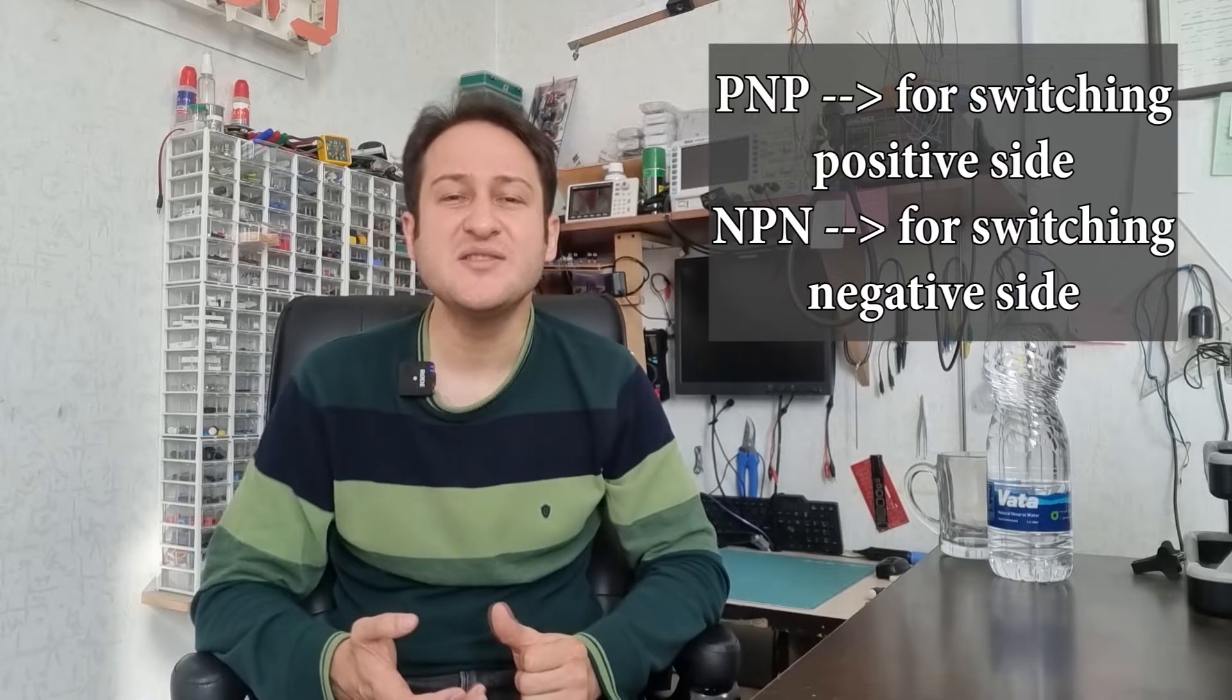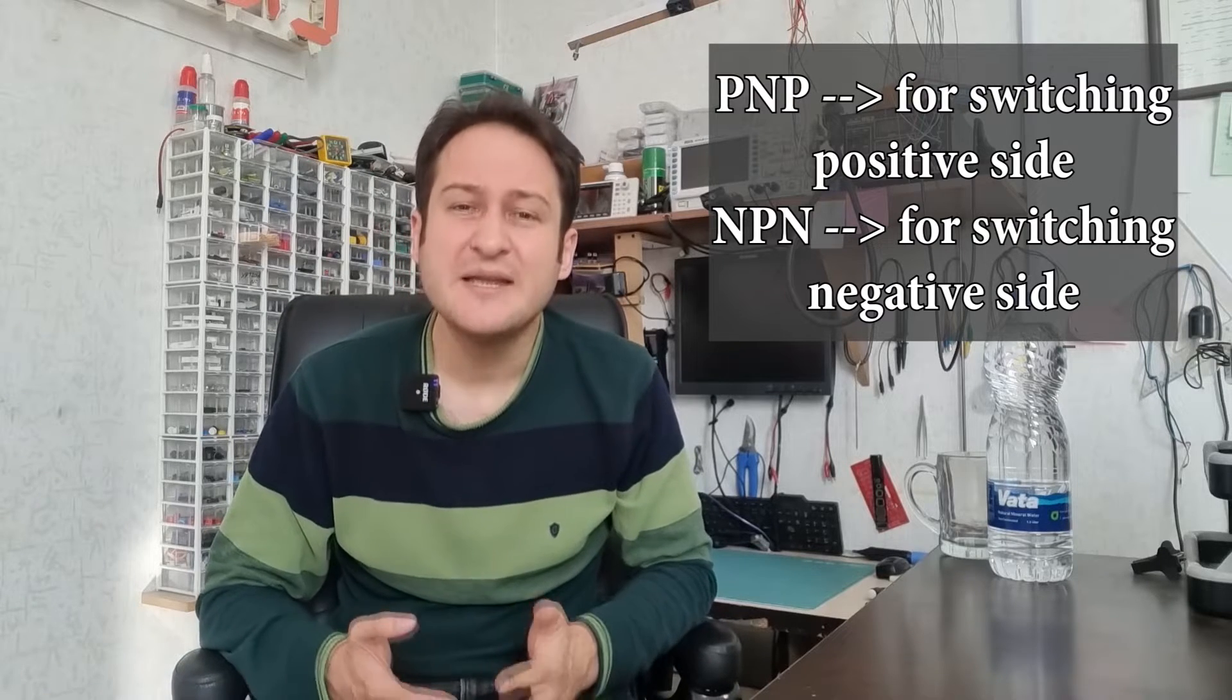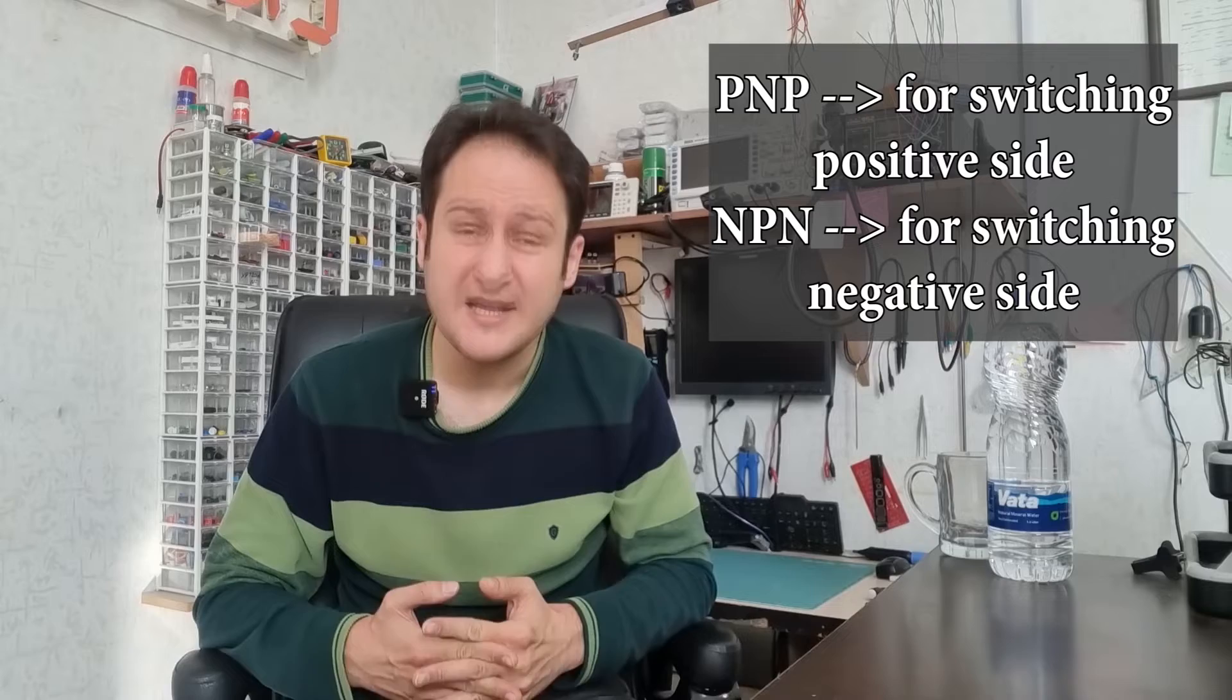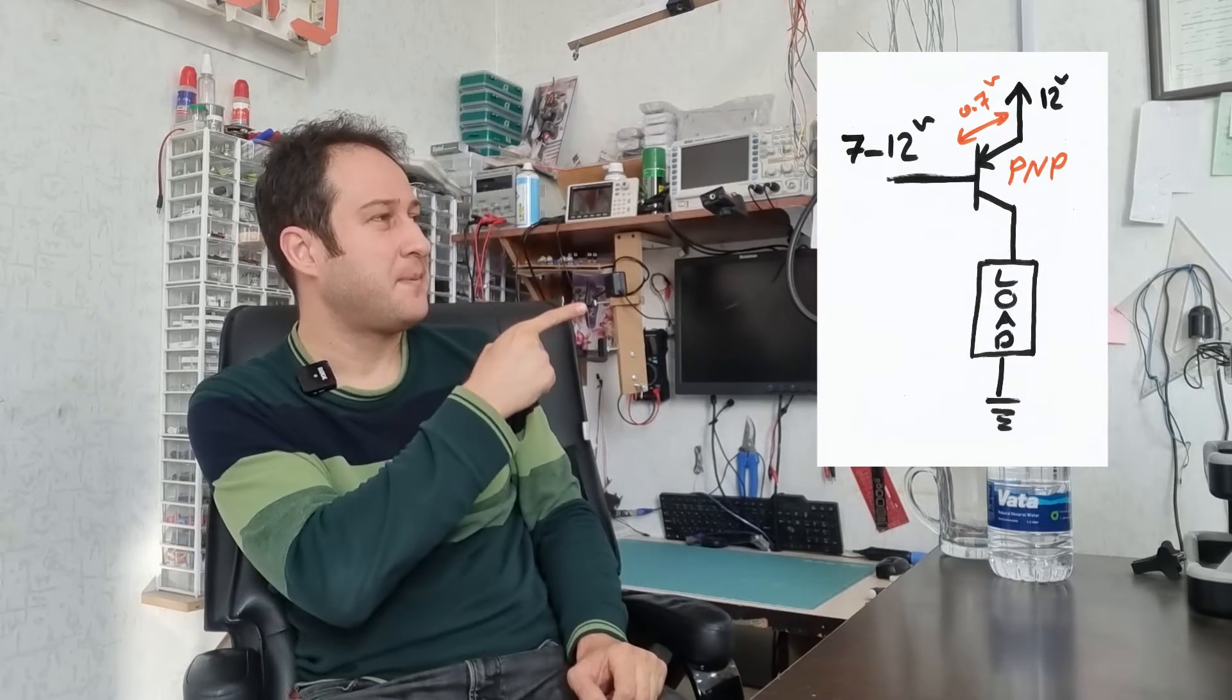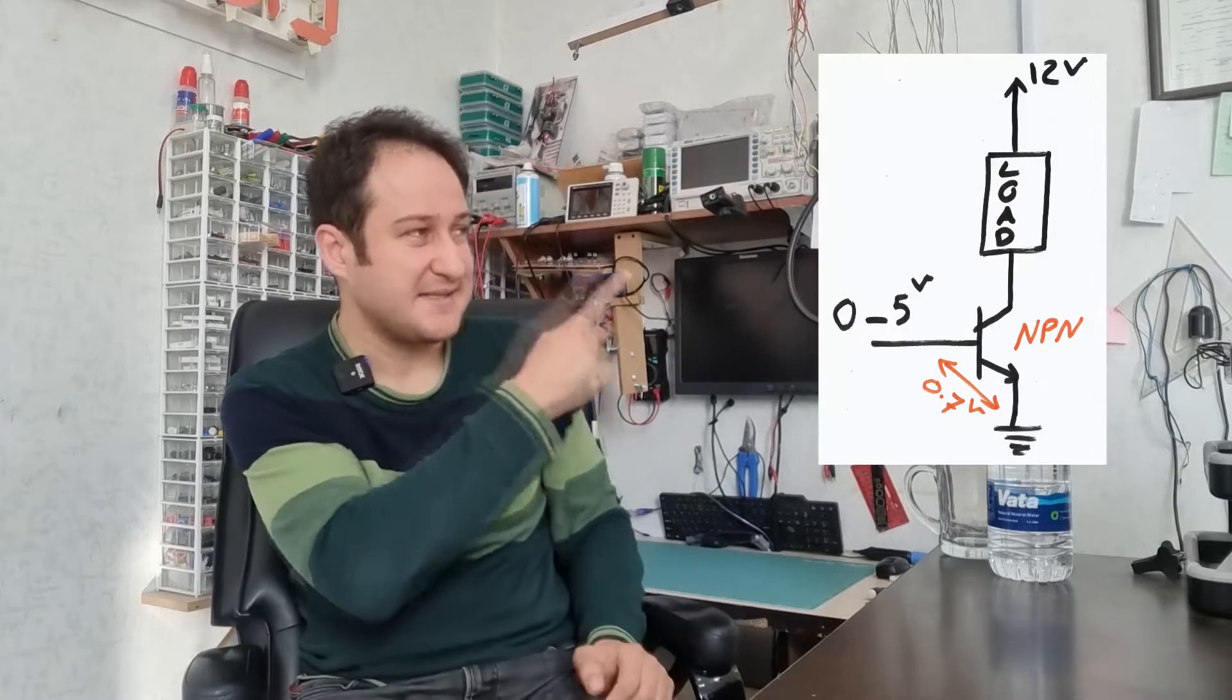The answer to this question is dependent on the transistor type you are going to use. If your transistor is a PNP type, then you have to place it on positive side of power supply, like this. And if your transistor is an NPN type, then you have to switch the negative side or ground side of power supply, like this.